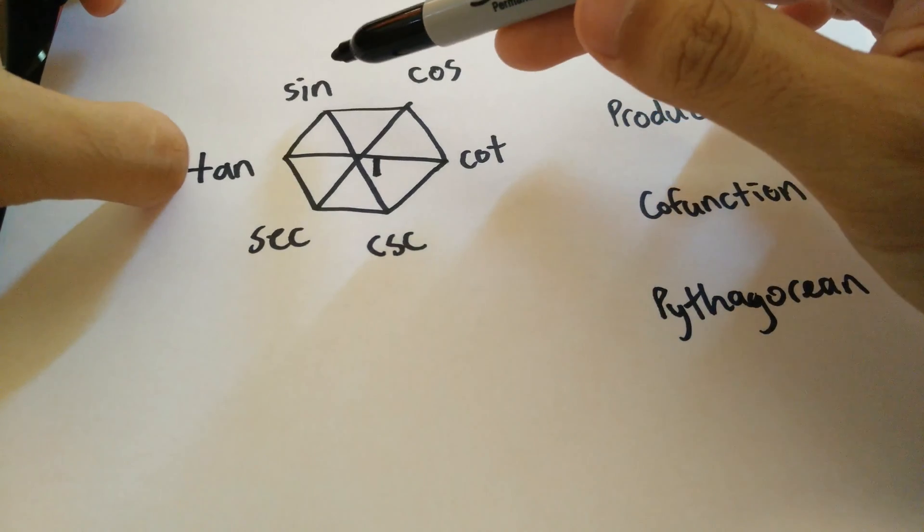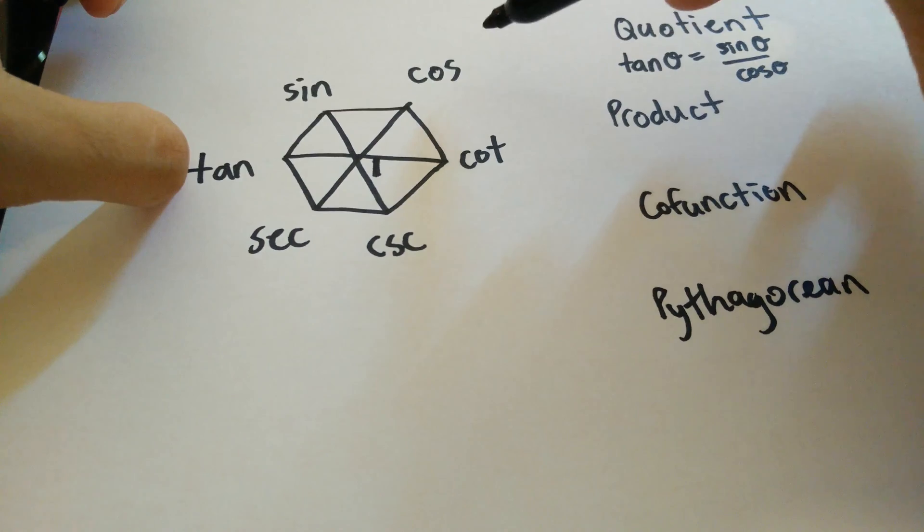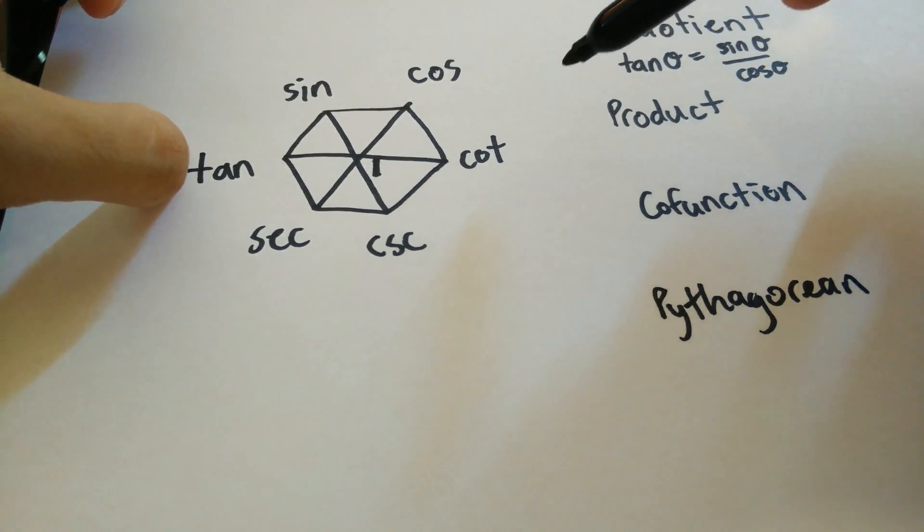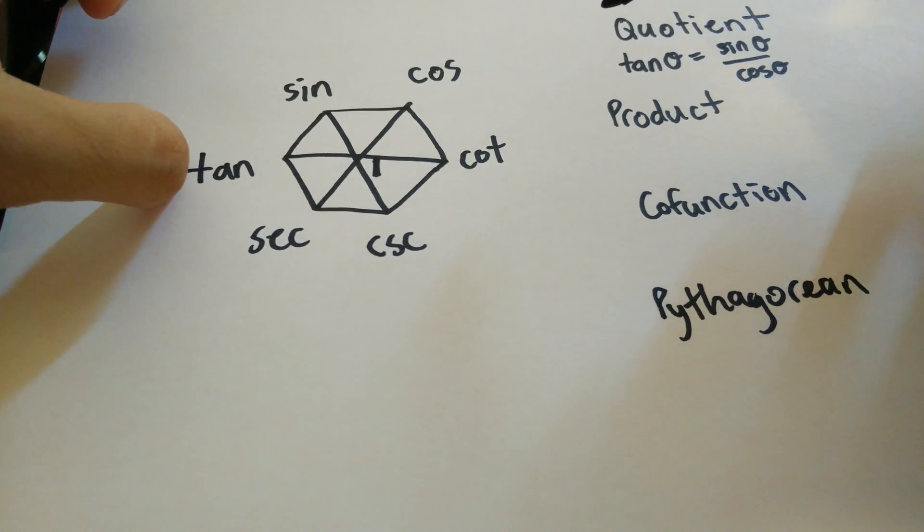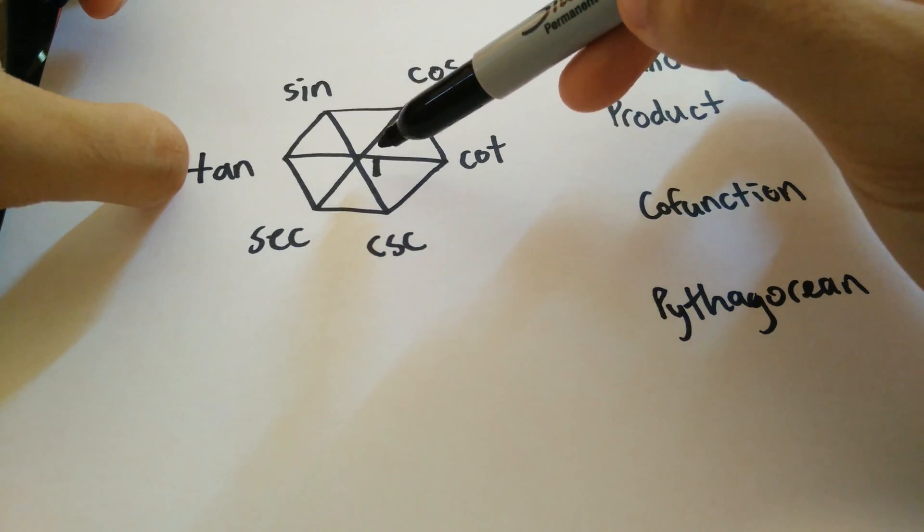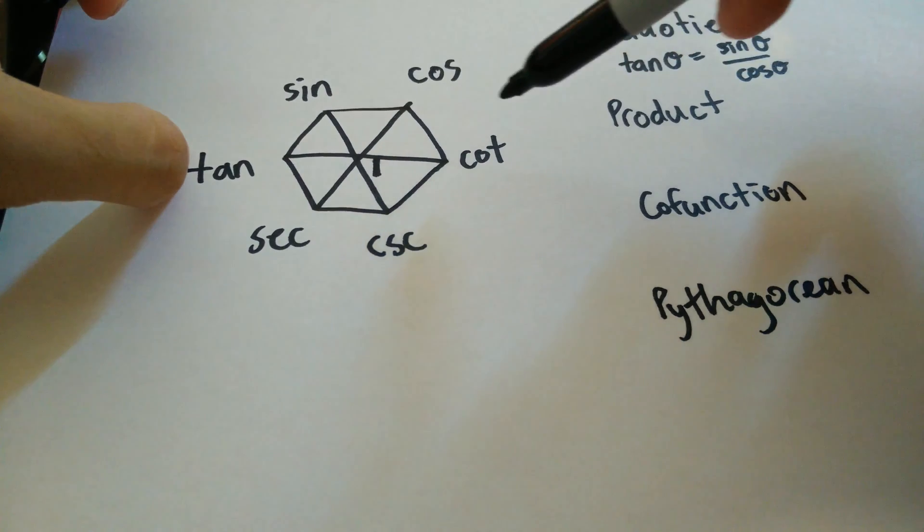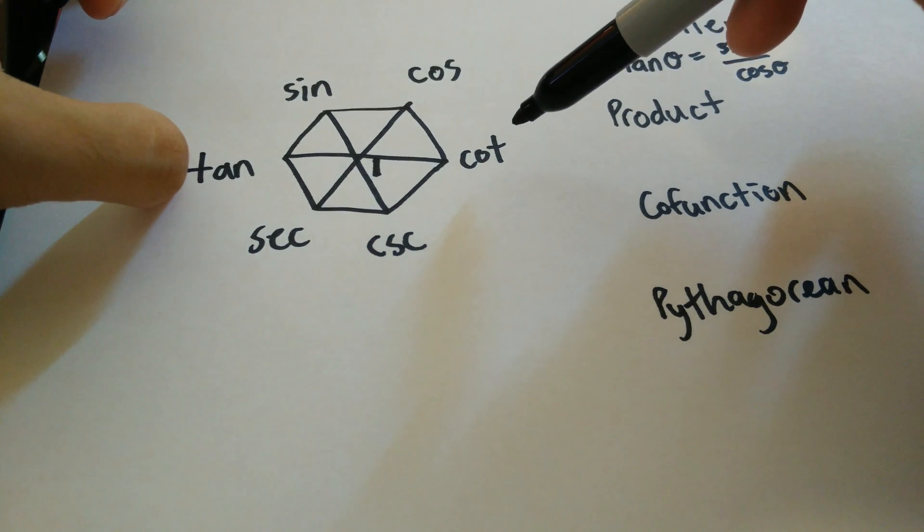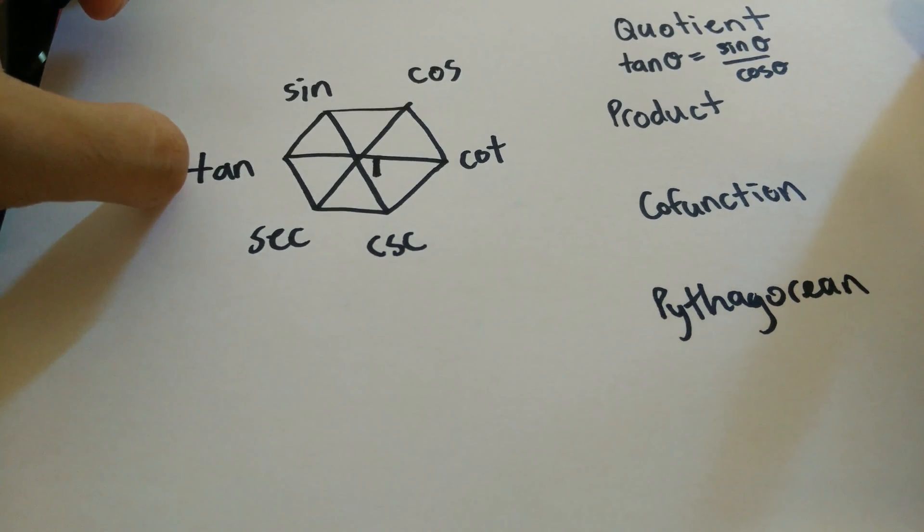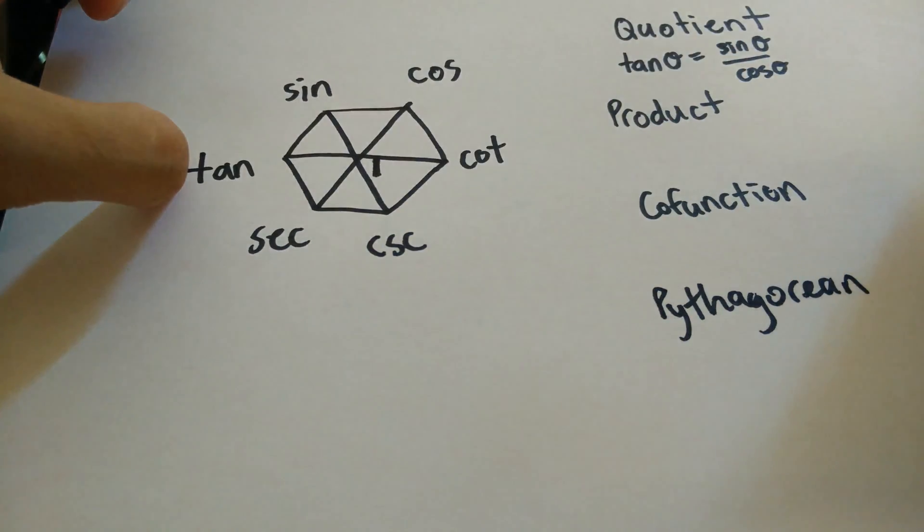Similarly, sine theta is equal to cosine theta over cotangent theta. We can also use this using the 1, which is there because of this. Tangent theta is equal to 1 over cotangent theta. Now that should be obvious because that just means reciprocal and you already knew that to fill this out anyways.